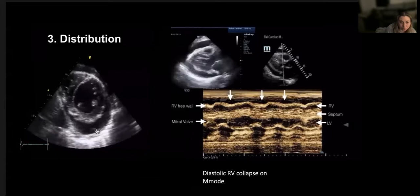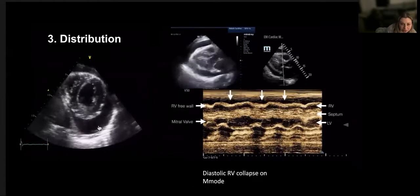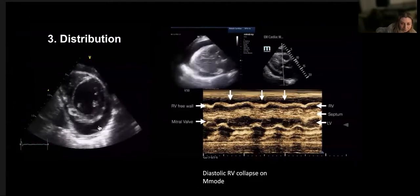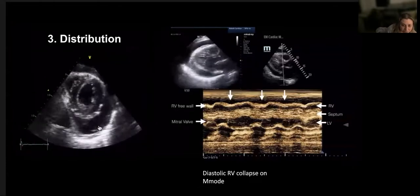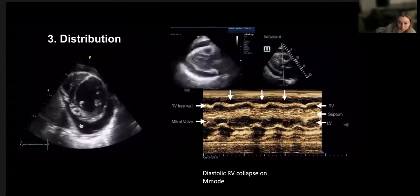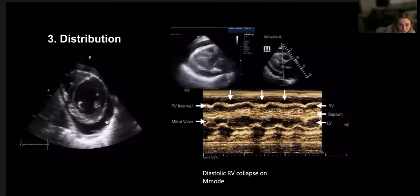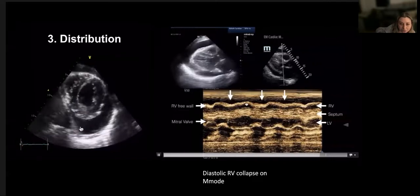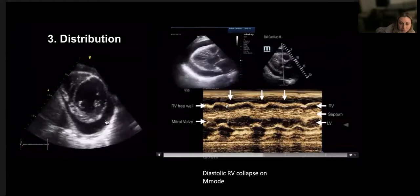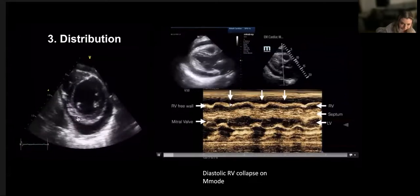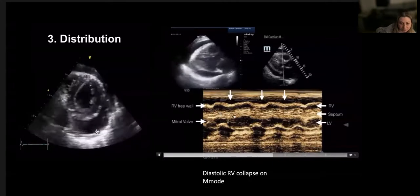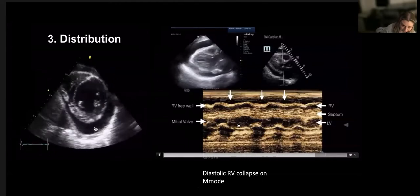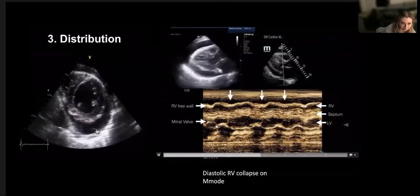This video shows M-mode and its use in assessing effusions. You can put M-mode across and see the effusion. It's also useful for identifying cycle phases. At the top is subcutaneous tissue, then the pericardial effusion as an anechoic area, then the RV free wall going up and down, then the septum, then the left ventricle cavity. The mitral valve creates an M shape with up-and-down motion in diastole - wherever we see this M shape, that's diastole.